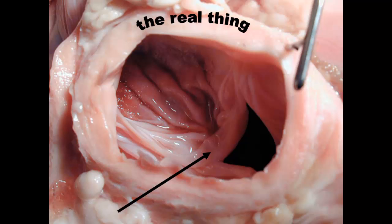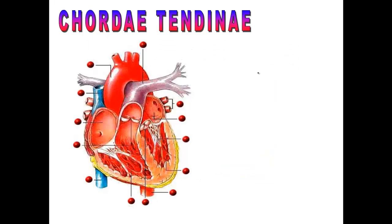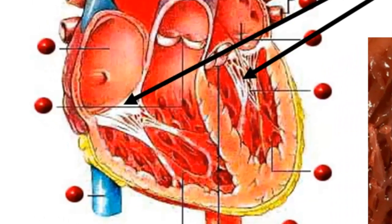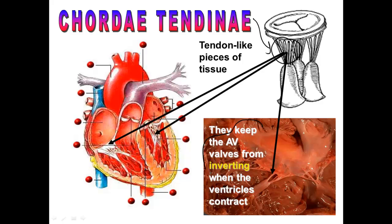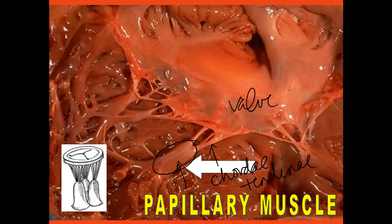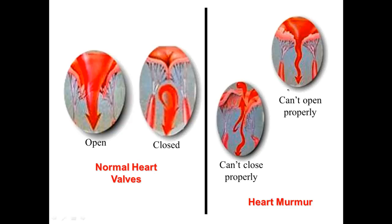This is what an actual valve looks like inside a cow heart — you can see the three cusps here. The tricuspid valve has three cusps, which is why it's called tri, and it's on the right. The bicuspid has two cusps. The chordae tendineae are the tendons that connect the valves to the muscles. They keep the valves from inverting — flipping inside out when the ventricles contract. You also have the papillary muscle, which is connected to the chordae tendineae and just holds and supports them. If you have a normal heart valve, you can see what it looks like when open and closed, but if you have a heart murmur, it might be because your valve doesn't open or close properly.